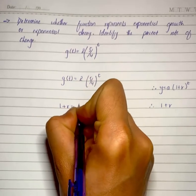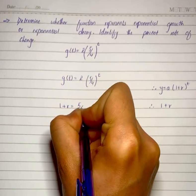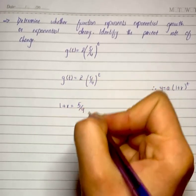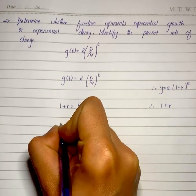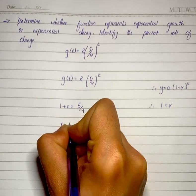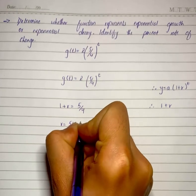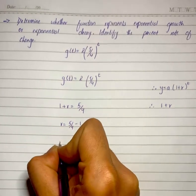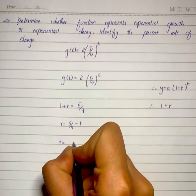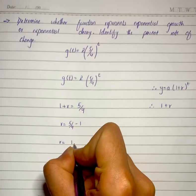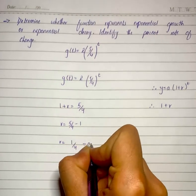Now on further simplification for r, we will get r equals 5/4 minus 1. When we simplify this, it will become 1/4, that equals 0.25.